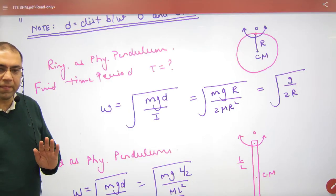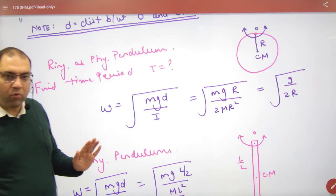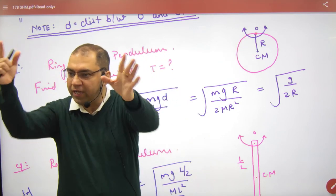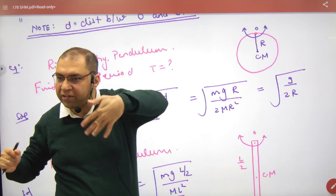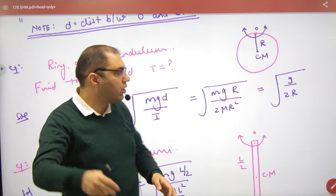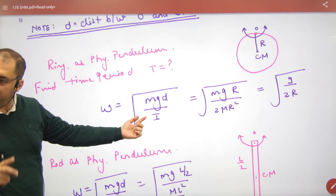So an example of this physical pendulum, you will have a question directly. It will say that a ring is tied on a nail and oscillated. It is a physical pendulum. What will happen in time period? Or what will happen in omega? Omega is the formula mgd by I.